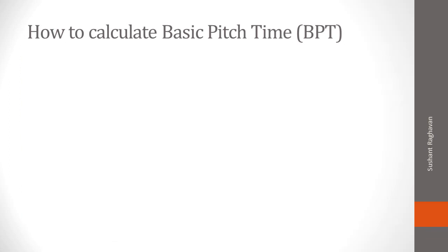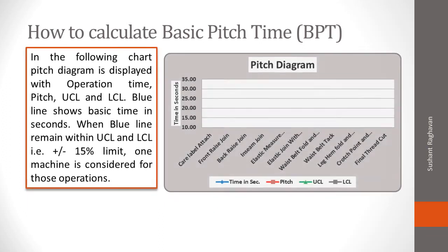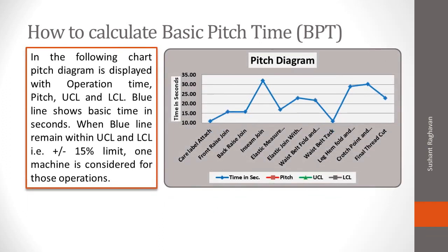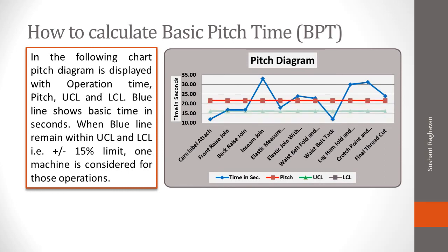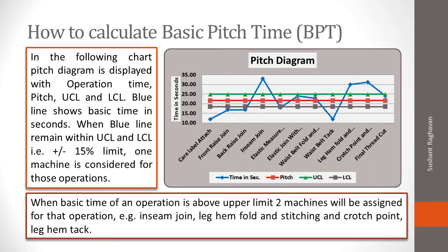In the following pitch diagram, operation time, pitch, upper control limit, and lower control limit are all displayed. The blue line shows basic time in seconds. When the blue line remains within the upper and lower control limits — that is, within the ±15% limit — one machine is considered for those operations. When the basic time of an operation is above the upper limit, two machines will be assigned for that operation. For example, in seam join, leg hem fold and stitching, and cross point leg hem tack.